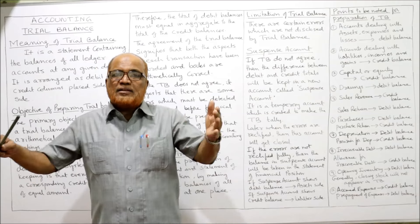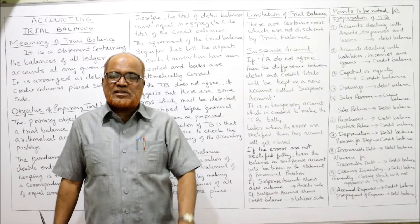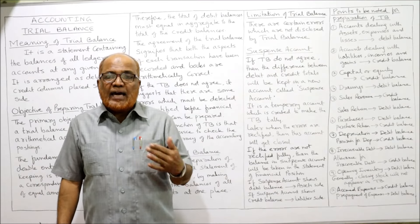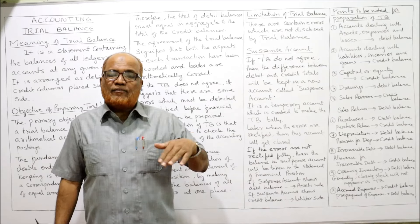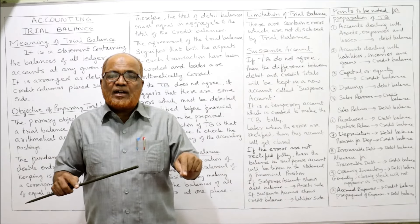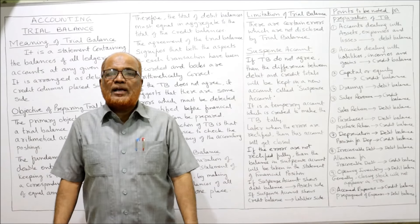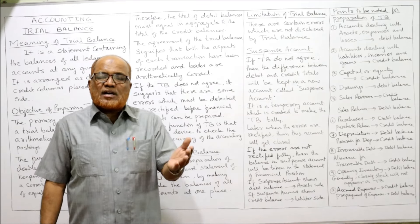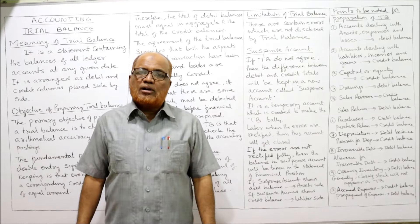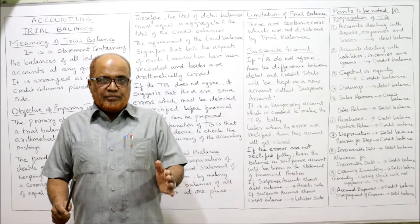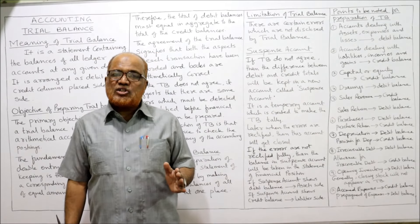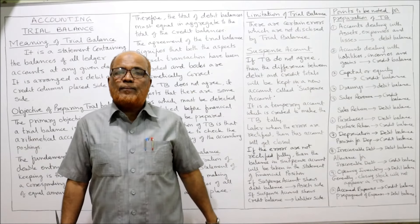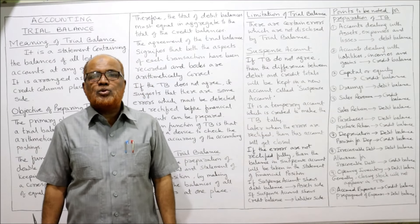Temporarily we make the trial balance tally by using the suspense account. Later on, we find out where the errors are, and after rectifying the errors the suspense account gets closed. The suspense account may sometimes show a debit balance and sometimes a credit balance. If the errors are not detected and rectified, and the suspense account is still showing a balance, that balance will be shown in the statement of financial position.